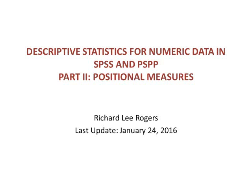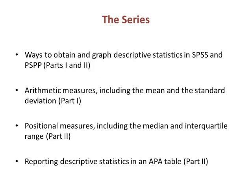This is Professor Rogers. This presentation is the second video in a two-part series on univariate descriptive statistics in the analysis of numeric variables. Across the two videos we look at how to get these statistics in SPSS and PSPP. We take a look at two different types of numeric descriptive statistics: arithmetic and positional. We close this second video with how to report descriptive statistics in APA style tables.